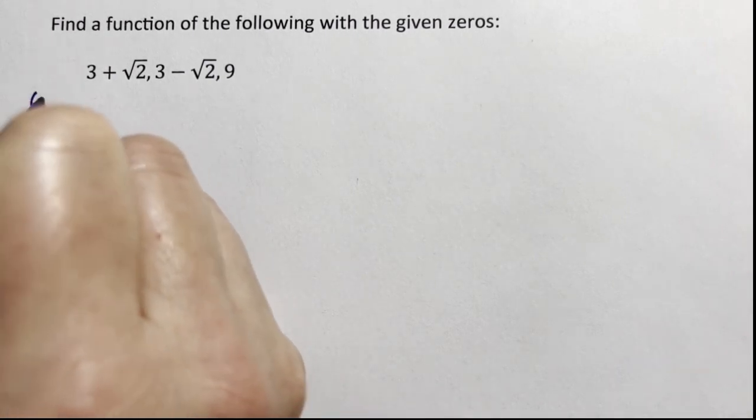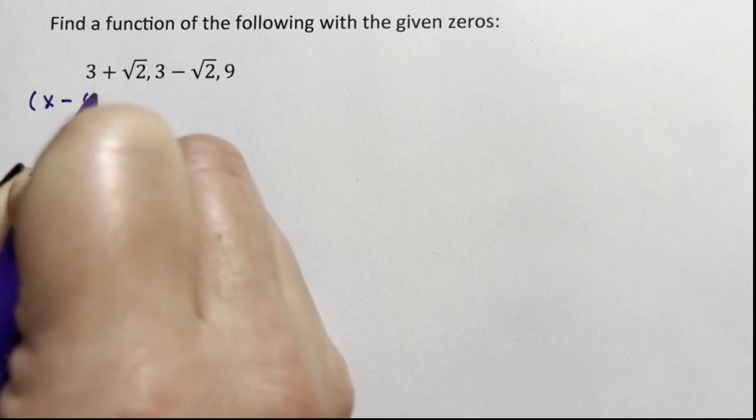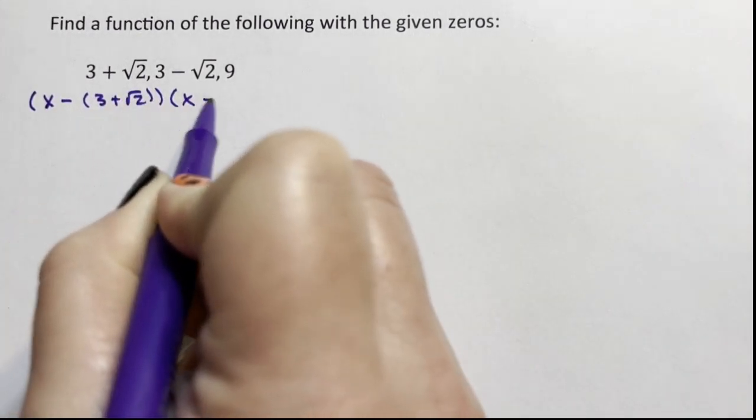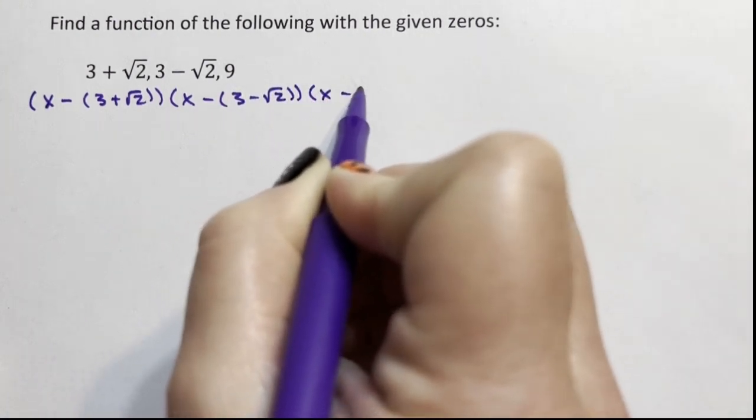The other way is to say x minus 3 plus the square root of 2 in parentheses, x minus 3 minus the square root of 2 in parentheses, and then x minus 9.